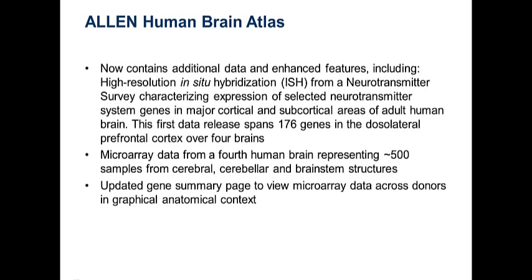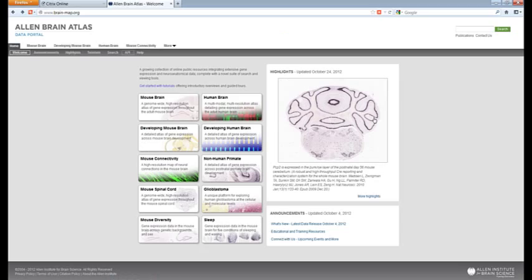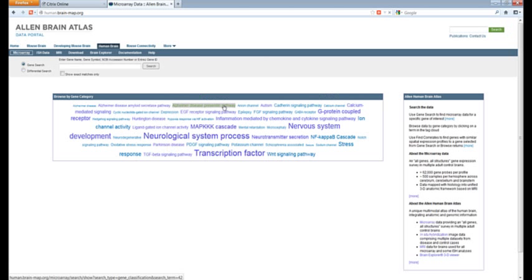In this particular release, we have additional data and enhanced features. We have a high-resolution in-situ hybridization study from a neurotransmitter survey, looking at select neurotransmitter systems in major cortical and subcortical areas of the adult human brain. This is our first data release — 176 genes in the dorsolateral prefrontal cortex, across four distinct brains. We also have microarray data from a fourth brain and an updated gene summary page.